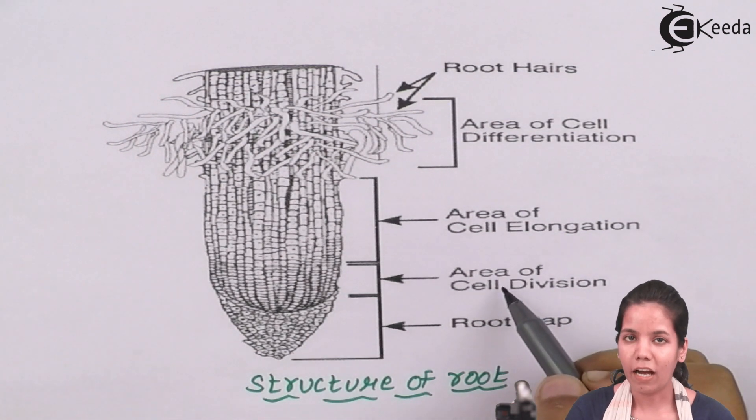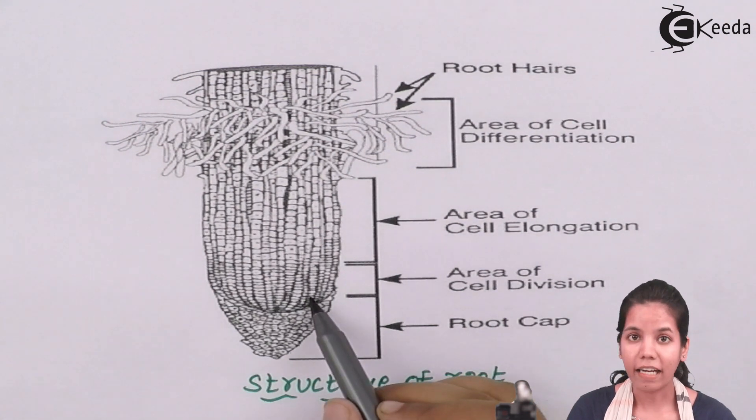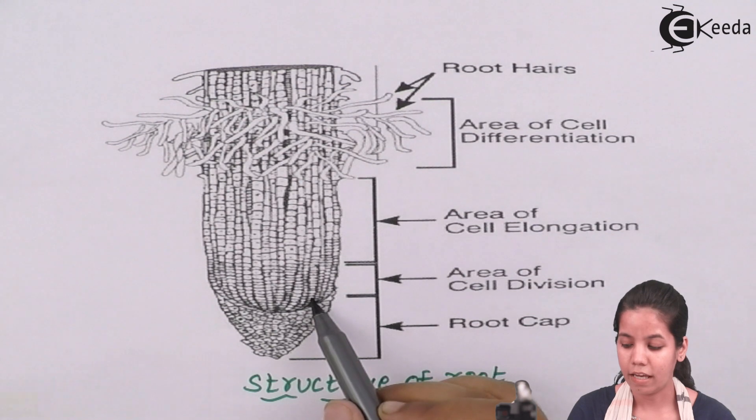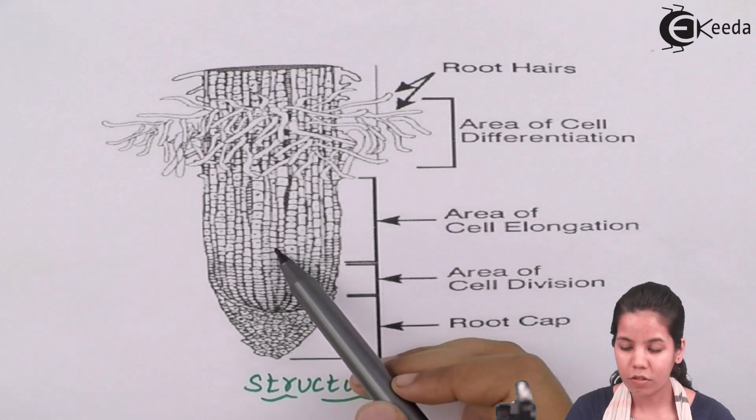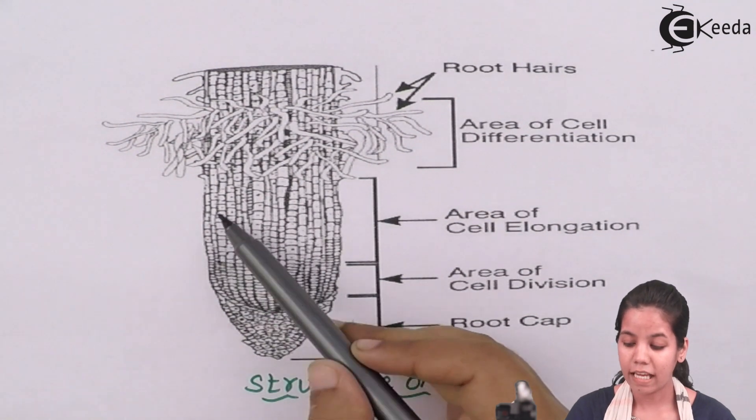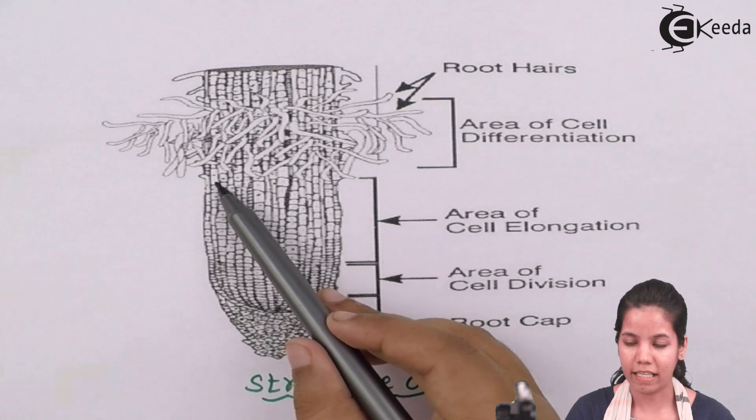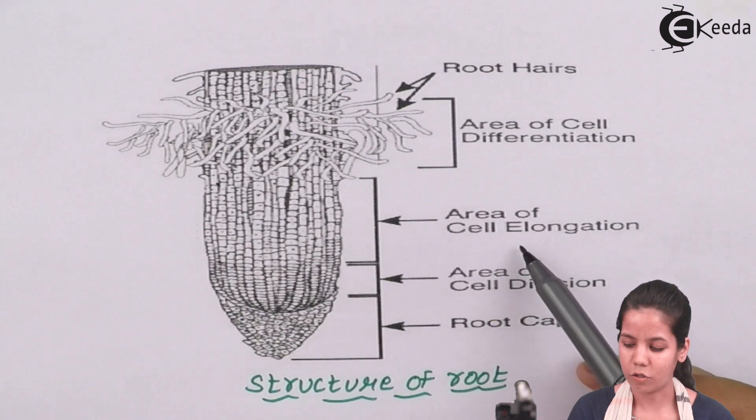Next is your area of cell division or you can say meristematic activities, in which cells are continuously divided as you can see. And once cells are continuously divided it causes a lengthwise increase in the cell number which is your region of elongation.